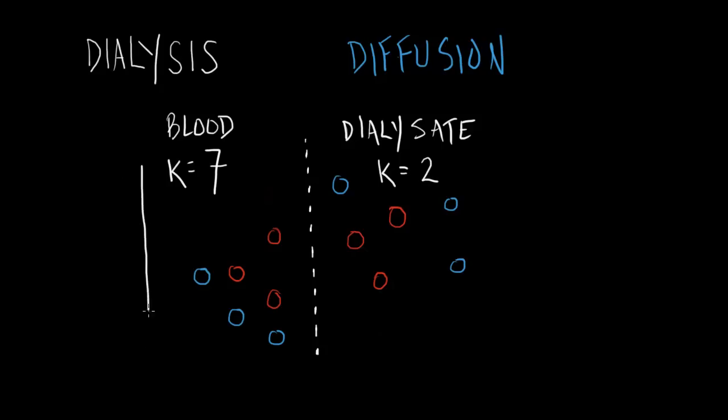Blood is pumped in one direction and dialysate is pumped in the other direction. And what do you suppose happens over time? Potassium leaks essentially from the blood across the semi-permeable membrane into the dialysate. And then the dialysate goes down the drain out of your body.